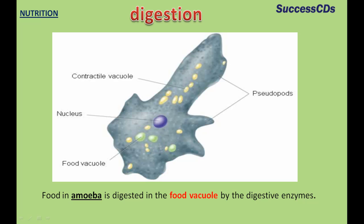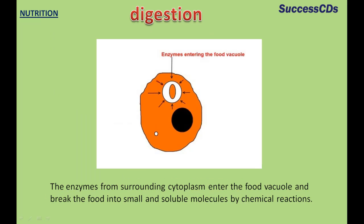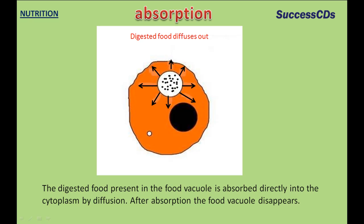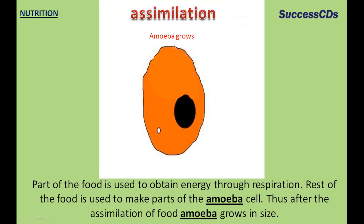Food in amoeba is digested in the food vacuole by digestive enzymes. The enzymes from the surrounding cytoplasm enter the food vacuole and break the food into small and soluble molecules by chemical reactions. The digested food present in the food vacuole is absorbed directly into the cytoplasm by diffusion. After absorption, the food vacuole disappears. Part of the food is used to obtain energy through respiration, and the rest of the food is used to make parts of the amoeba cell.